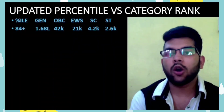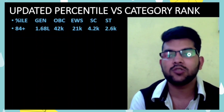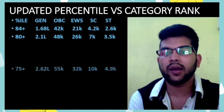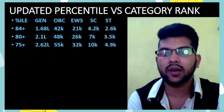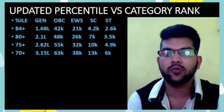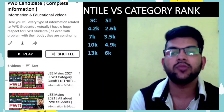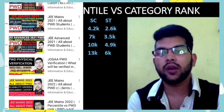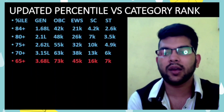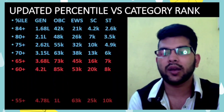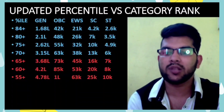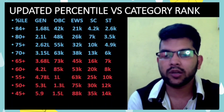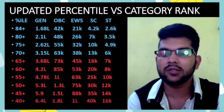Now for General rank only — for 84+ percentile, rank under 1.68 lakh. For 80+ percentile, under 2.1 lakh. For 75+ percentile, under 2.62 lakh. For 70 percentile, under 3.15 lakh. For OBC, EWS, SC, ST you can check sideways. For 65+ percentile, under 3.68 lakh. For 60+ percentile, under 4.2 lakh. For 55+ percentile, under 4.78 lakh. For 50+, under 5.3 lakh. For 45+, under 5.9 lakh. For 40+ percentile, rank under 6.4 lakh.